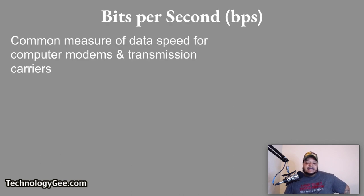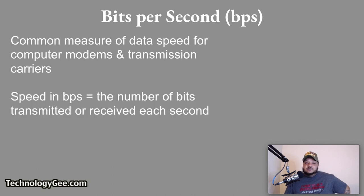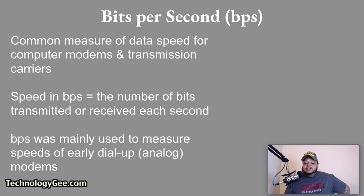Bits per second is a common measure of data speed for computer modems and transmission carriers. As the term implies, the speed in bits per second equals the number of bits transmitted or received each second. Bits per second was mainly used to measure the speeds of early dial-up modems, or analog modems.